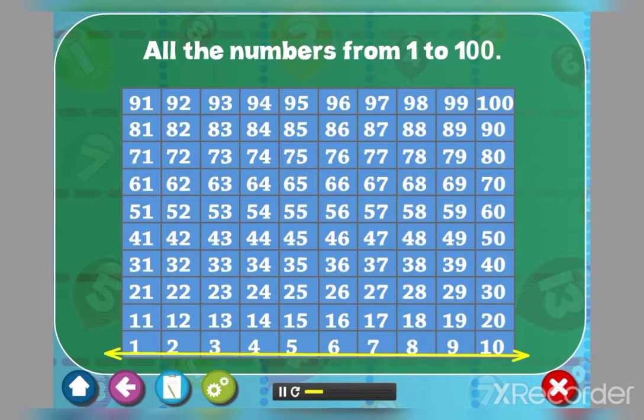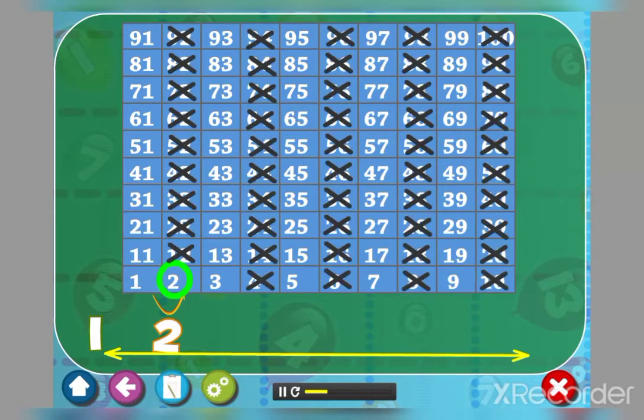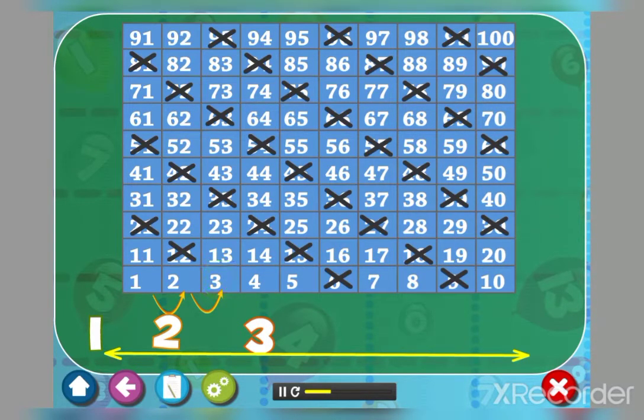Since one is neither a prime nor a composite number, cross it out. Two is the smallest prime number, hence we circle two and cross out all multiples of two. We now circle the next prime number three and cross out all multiples of three. We do the same with five and all the following numbers till they are either circled or crossed out.